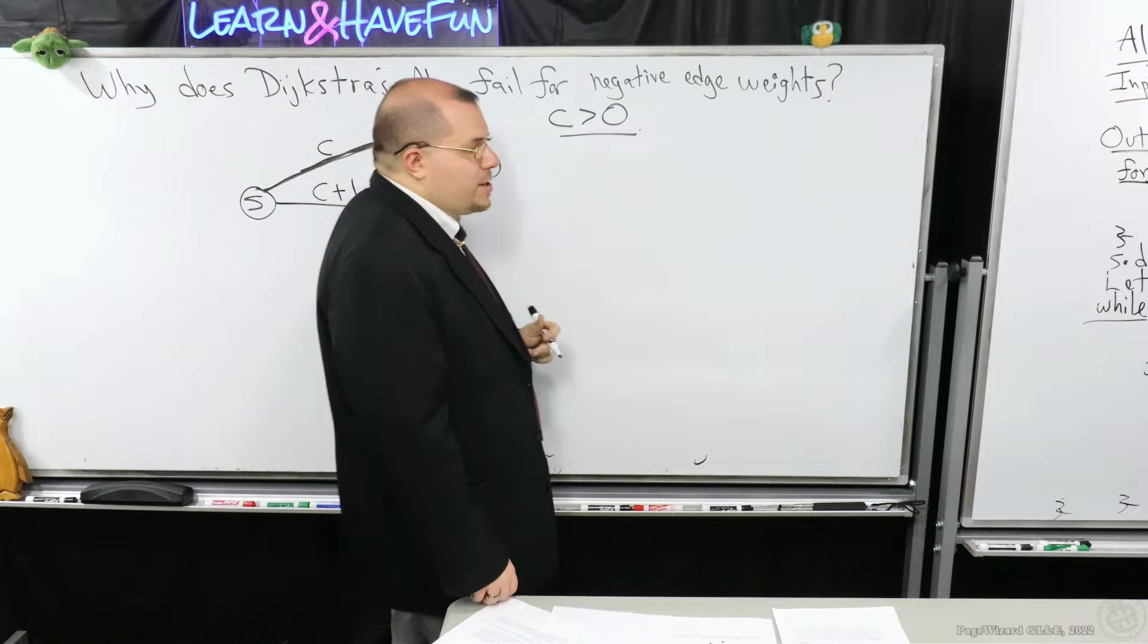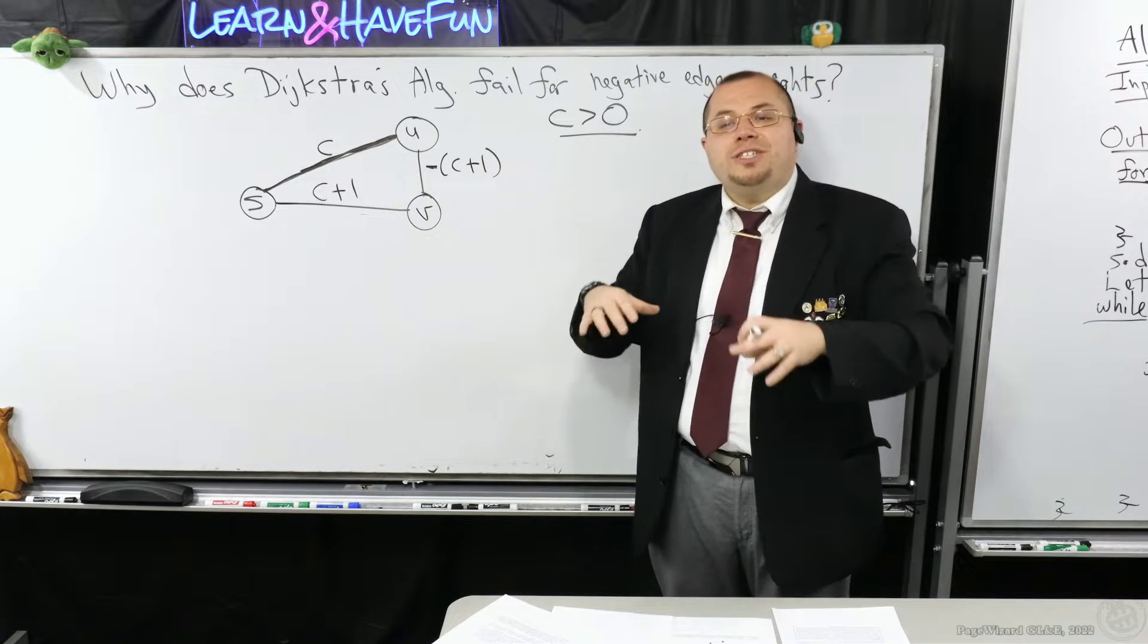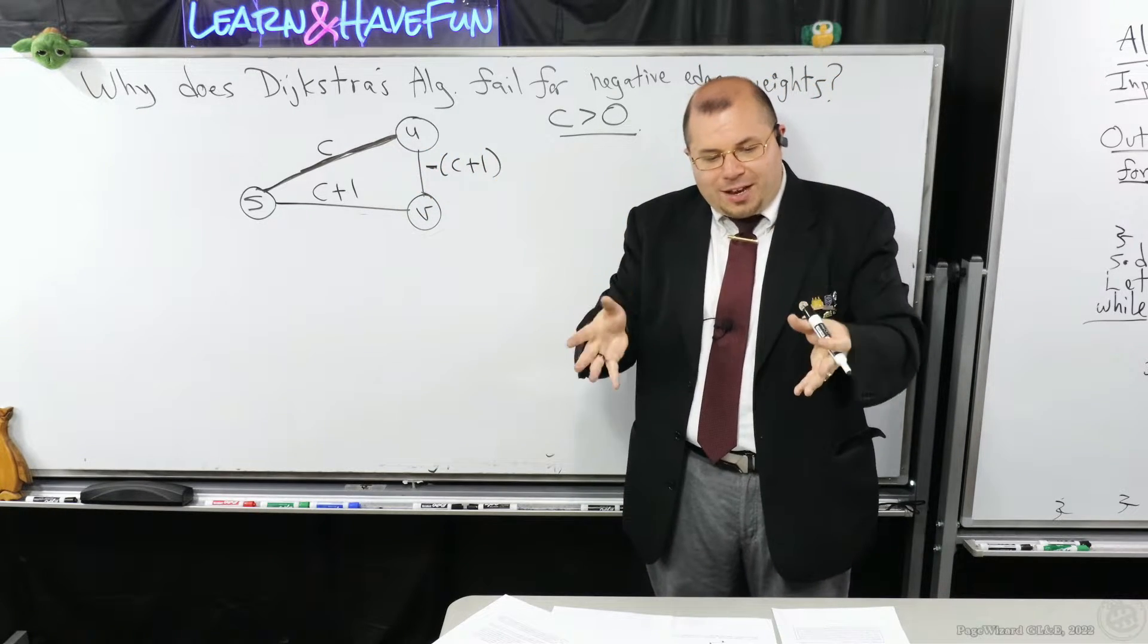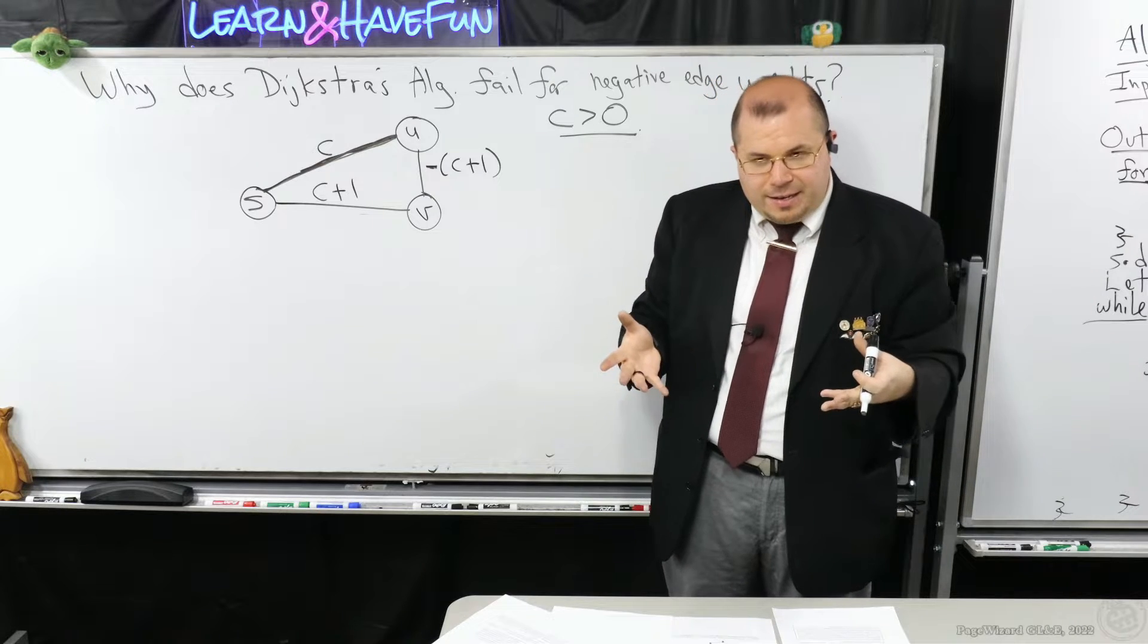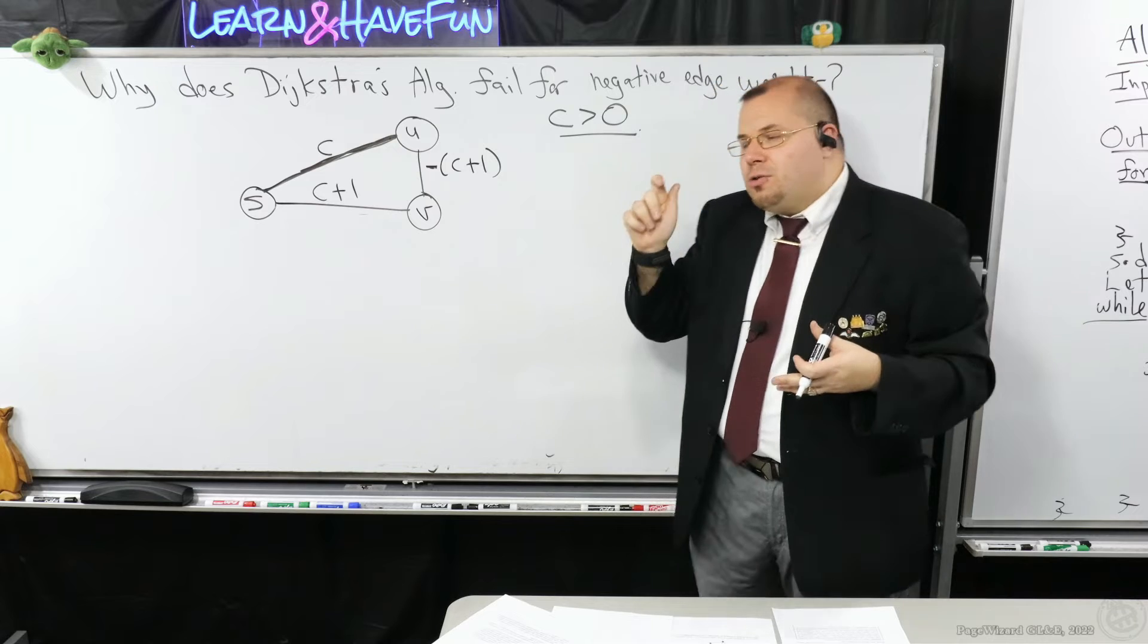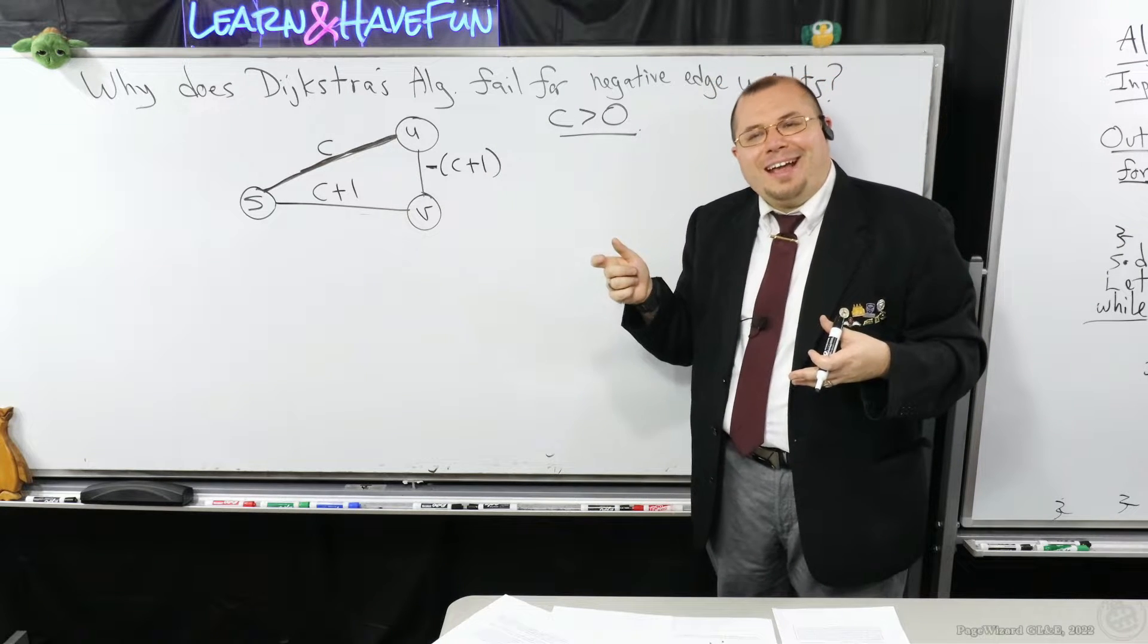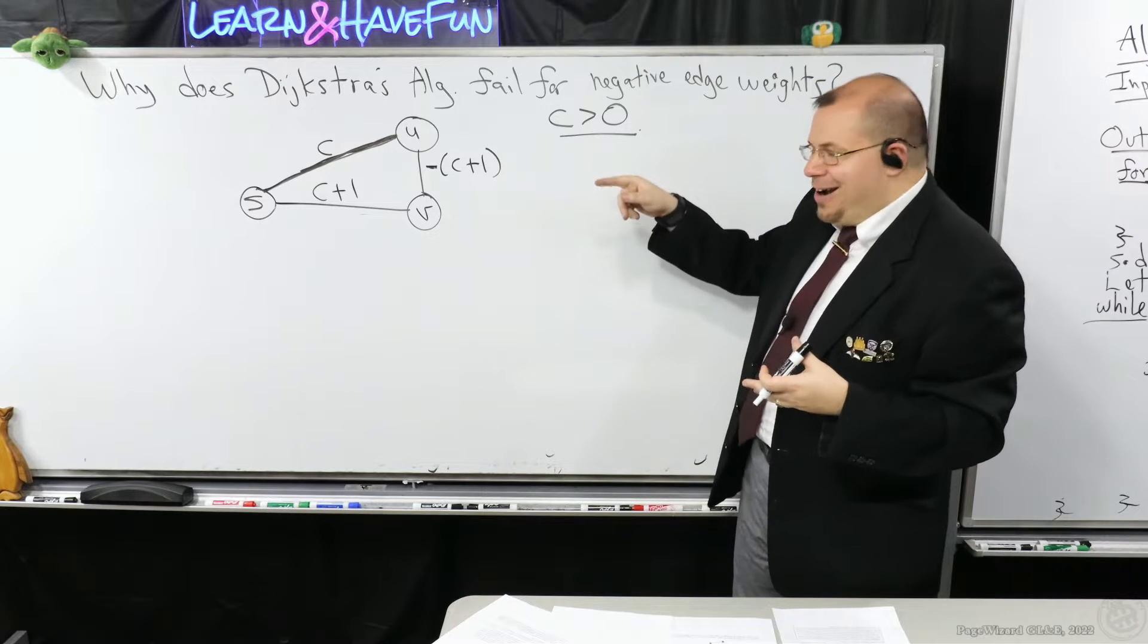So this is actually not computing the shortest path from S to U, which is invalid. If you go back to our proof of correctness, the part of our stage in our proof relied on this fact that all the edge weights were non-negative, right? This is why.